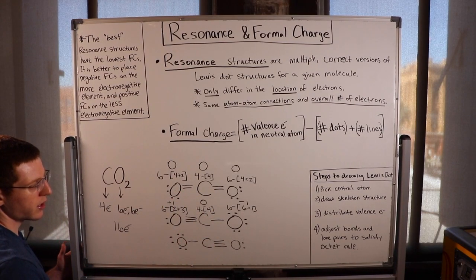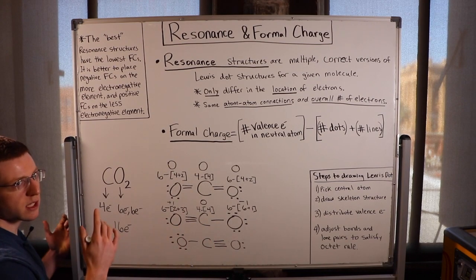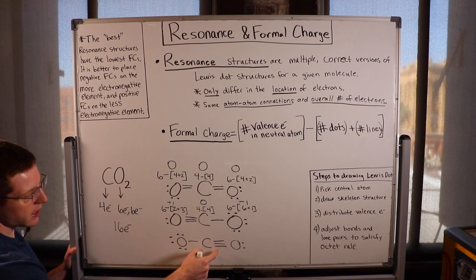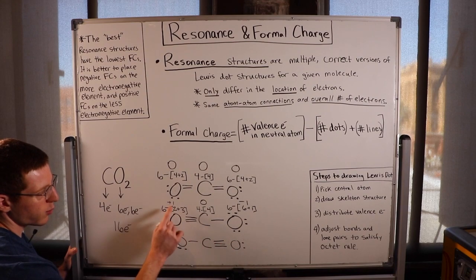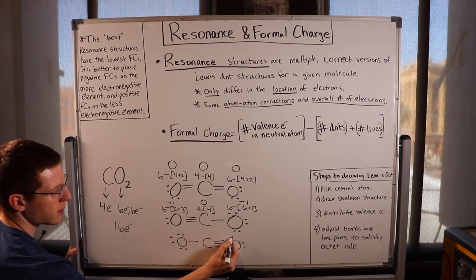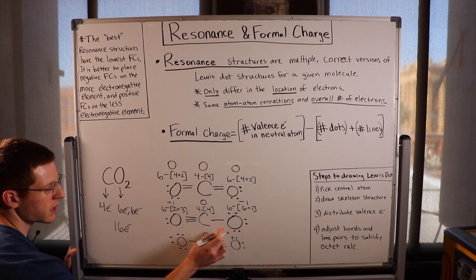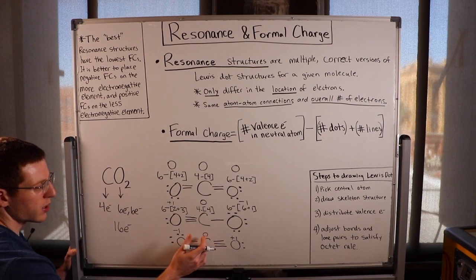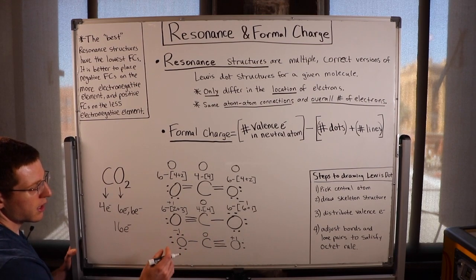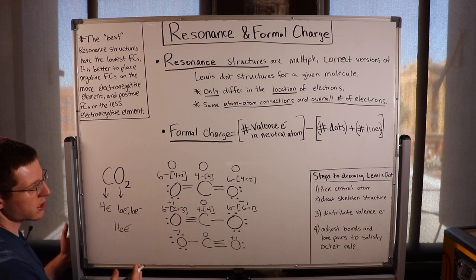The third structure is simply a mirror reflection of the second structure. So this oxygen has the same formal charge as before — plus 1 — carbon is 0, and the other oxygen is negative 1. These last two structures are essentially mirrored reflections of each other and are equivalently correct as resonance structures, but both inferior to the first.